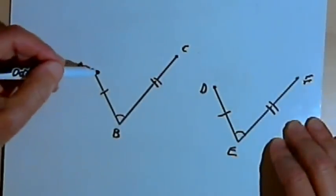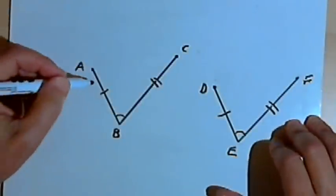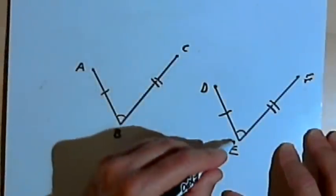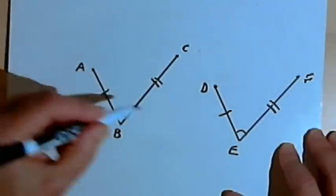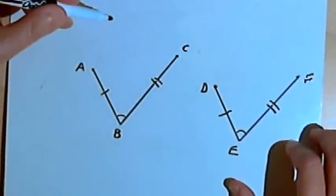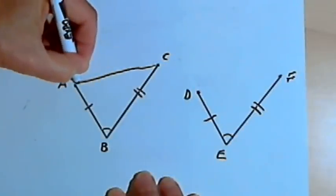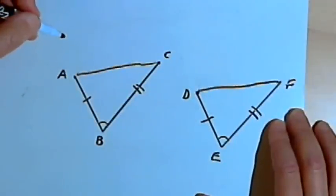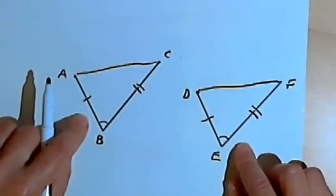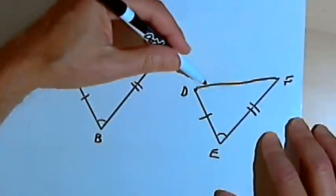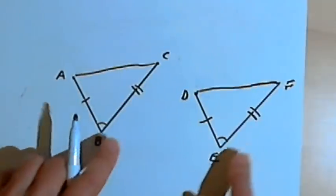Next we have something called side-angle-side congruency. I've drawn two figures, one called ABC and the other DEF. They're both made up of a pair of line segments that meet to form an angle. Angle B is congruent with angle E, AB is congruent with DE, and BC is congruent with EF. If I connect AC to form a triangle and connect DF to form a triangle with a straight line, those two straight lines would have to be exactly the same length, because I've taken two identical figures and done identical things with them. So these two triangles must be congruent — this is called side-angle-side congruence.